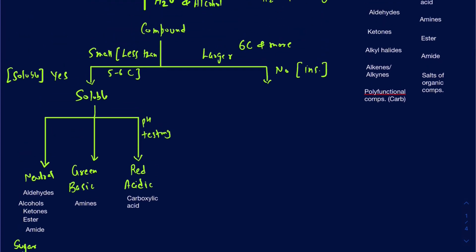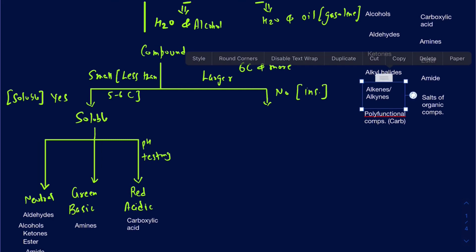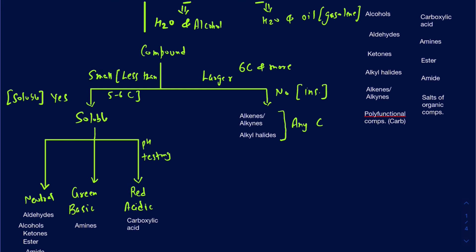Now let's look at what's going to be insoluble in water. The first compounds that would not dissolve in water are your alkenes and alkynes. Your alkyl halides would also be there. It doesn't matter how many carbons they have because they are relatively nonpolar to begin with — so any carbon number, whether 2, 3, 4, or all the way to maybe 9 or 10, they won't dissolve in water.